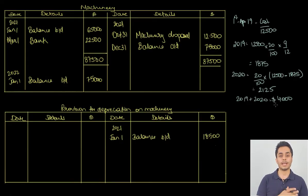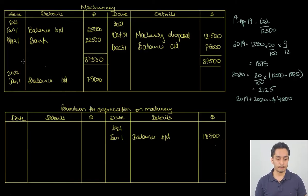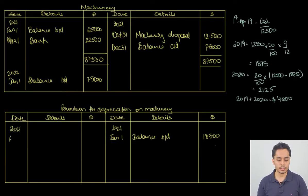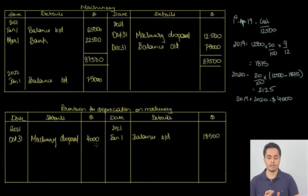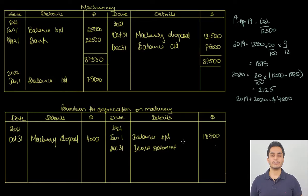That means 4,000 has already been depreciated on that particular asset, and that 4,000 is included in the 18,500 opening balance. Our next step is to reverse and remove this 4,000 from the provision account. So on the debit side: 2021, October 31, machinery disposal account, 4,000. Our next entry will be at the year end — we need to provide fresh depreciation for that year.